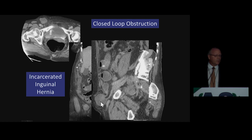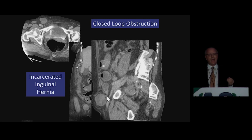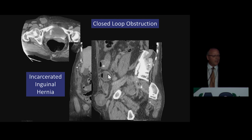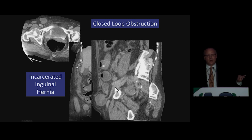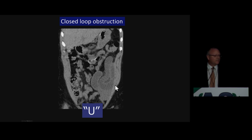We see C or U-shaped loops of bowel in any plane, radial distribution of those dilated loops forming the closed-loop, and we should almost always see two points of transition with the so-called beak sign. In an incarcerated hernia, the closed-loop is a very short segment of bowel trapped in the hernia itself, with two transition points created at the neck of the hernia — an entering site with one transition point where the proximal bowel is dilated, and the exit transition point leading to a collapsed loop of bowel. This concept applies to every single closed-loop, no matter where it is located or what the cause may be.